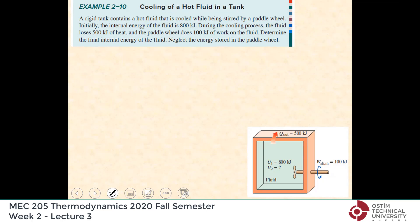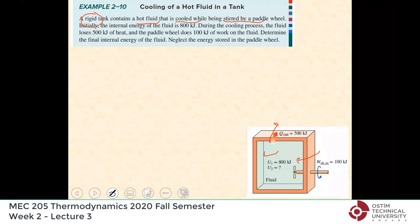Let's do a simple example. We have a rigid tank containing a hot fluid. Rigid tank means the size is constant — it cannot expand. The hot fluid is cooled, so heat is leaving, while a paddle wheel does work — so work is entering. Initially, the internal energy of the fluid is 800 kilojoules. During cooling, the fluid loses 500 kilojoules of heat, and the paddle wheel does 100 kilojoules of work on the fluid. What is the final internal energy?